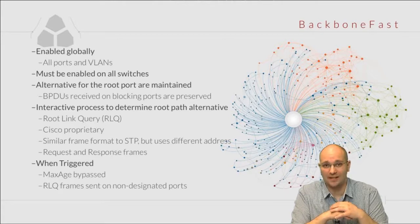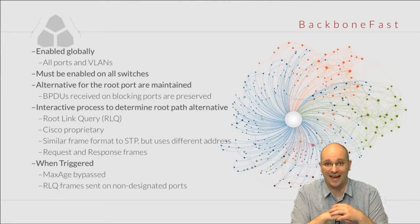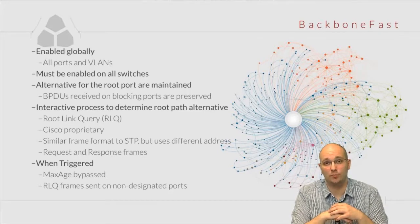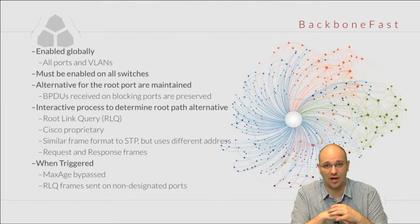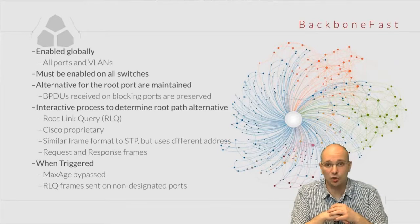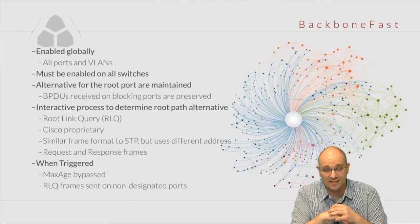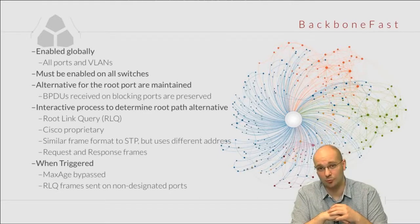But we cannot do that immediately in traditional spanning tree because we have to wait for the MaxAge to expire. That adds 20 seconds to the complete convergence in our network. Backbone Fast aims to bypass the MaxAge timer, but in order to do that, it really needs to determine whether the new path through the blocking port is indeed the best path to reach the root, instead of the current root port that we have.